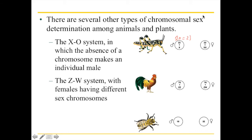In chickens and some amphibians and reptiles, you have something called a ZW system. In the XY system, the person with the two different chromosomes is the male, and the one with the same chromosomes is the female. But in the ZW system, the individual with the same chromosomes is the male, and with the different chromosomes it's the female. Since they were stuck on the letters X and Y, they went one letter over: one letter from X is W, and one letter from Y is Z, so they ended up calling it ZW.